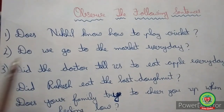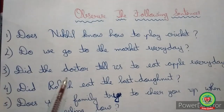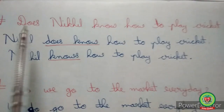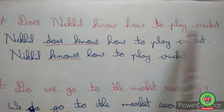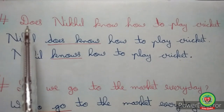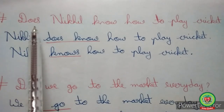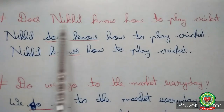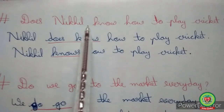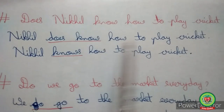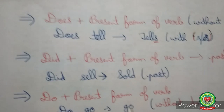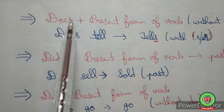We have to convert these interrogative sentences into simple statements. Take 'Does Nikhil know how to play cricket?' Here 'does' is the helping verb, so we place 'does' after the subject 'Nikhil.' The sentence becomes: 'Nikhil does know how to play cricket.'